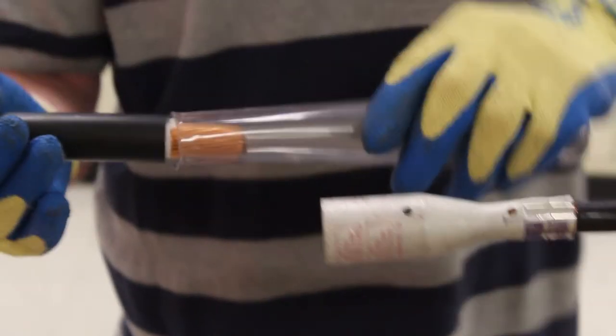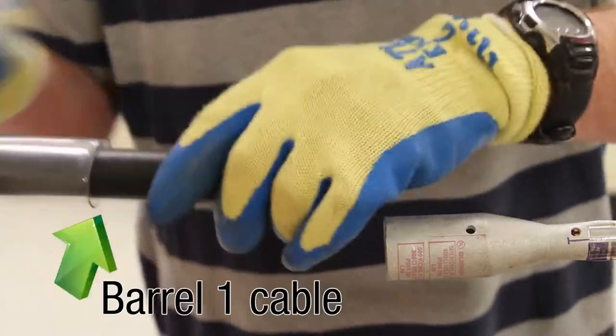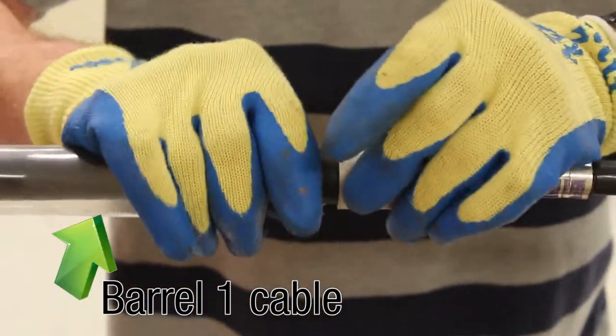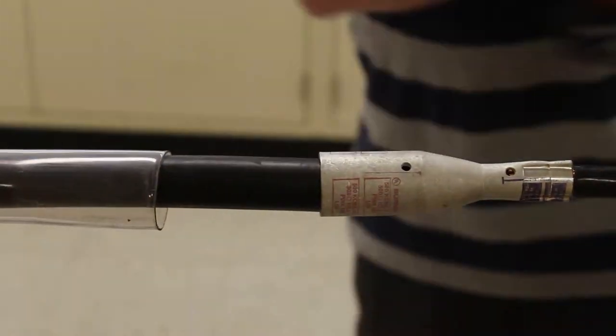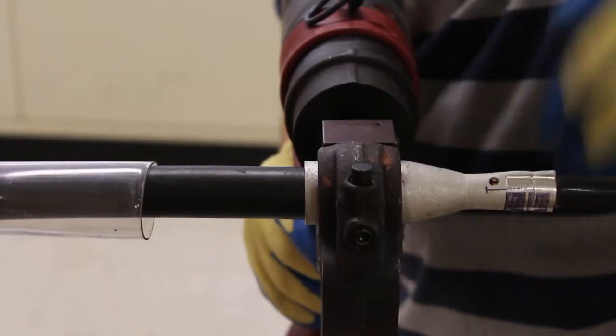Once the connection is made, slide the larger tube over barrel one cable and proceed with the same crimping steps, lining up the connector to the die and crimp.